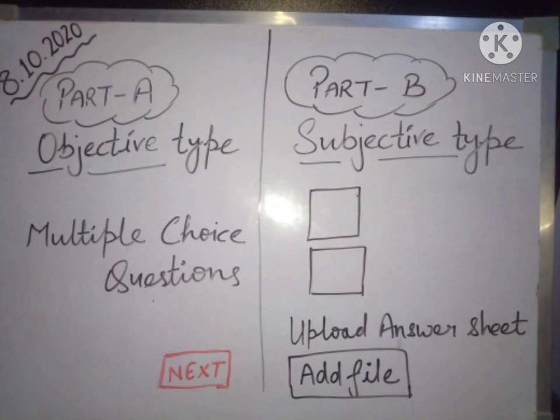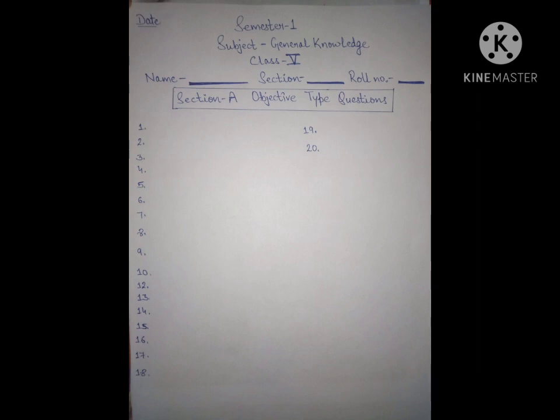And how you have to make this hard copy? For this, you have to use a plain A4 size sheet like this or you can use a rule sheet also. On this sheet, first of all, write date on the top, then the heading semester 1, the name of the subject, class, your name, your section and your roll number. Also, you should write under that section A objective type questions. And below that, you have to write the correct answers which you have clicked with the proper question numbers.